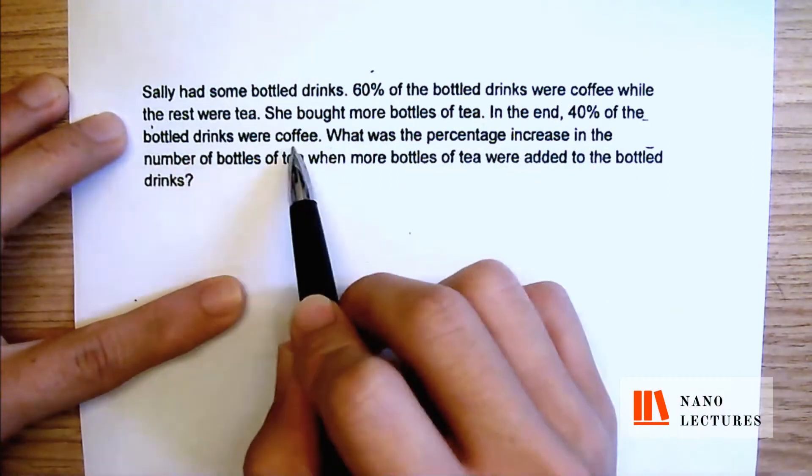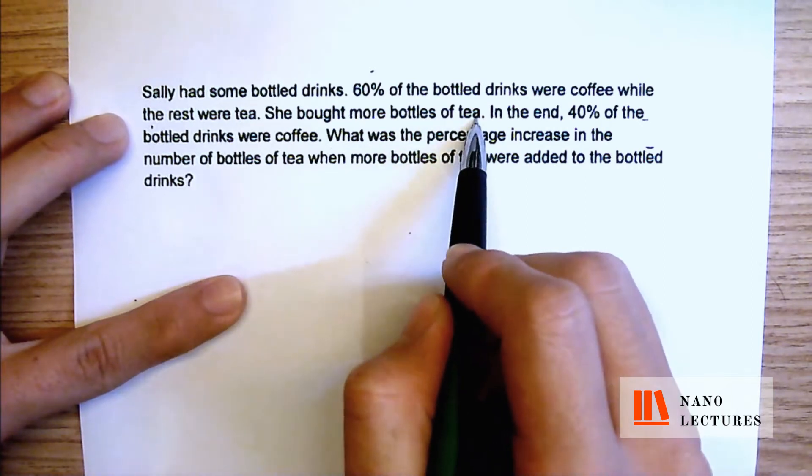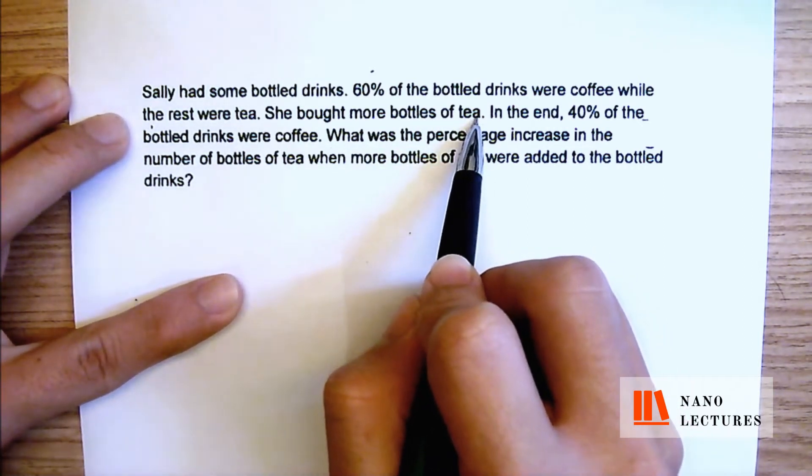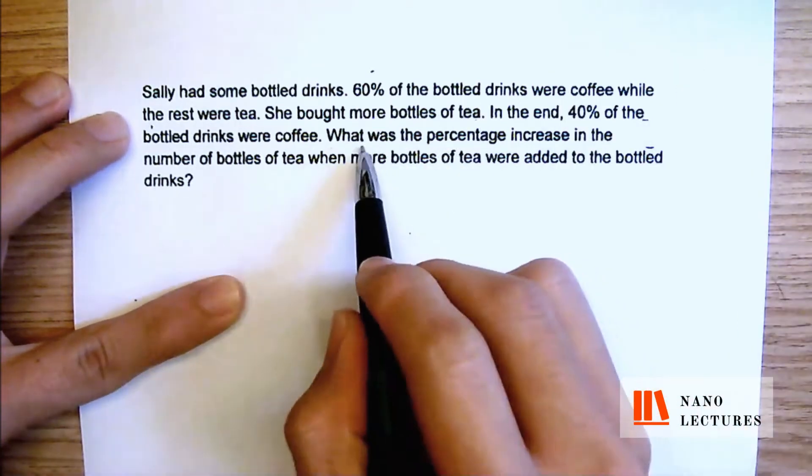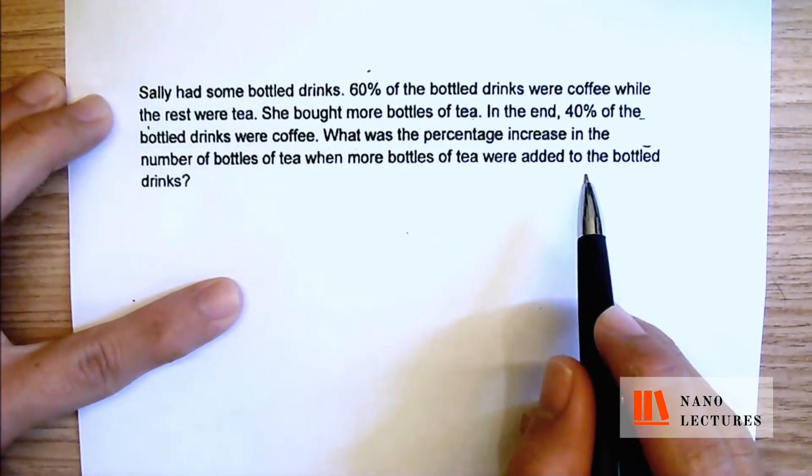In the end, 40% of the bottled drinks were coffee instead. Now, they said that she bought more bottles of tea, right? They did not say that she bought more bottles of coffee, which means that the number of bottles of coffee remained the same. Now, they said what was the percentage increase in the number of bottles of tea when more bottles of tea were added to the bottled drinks.